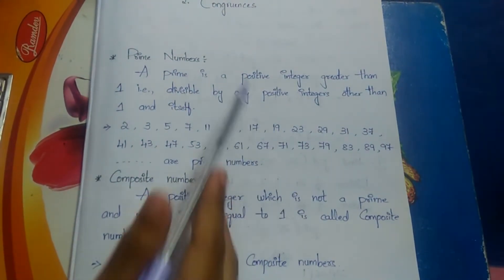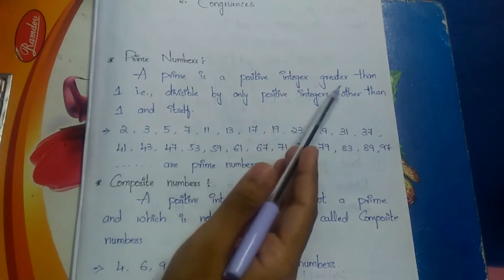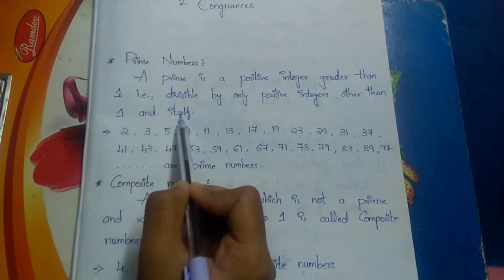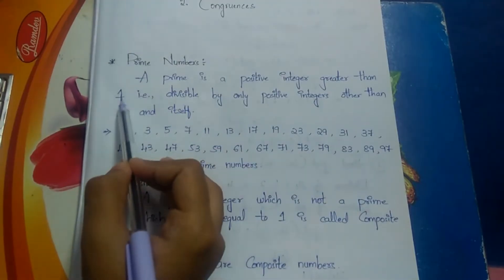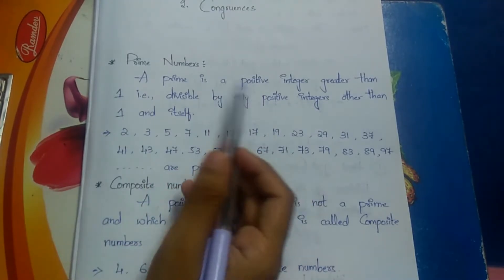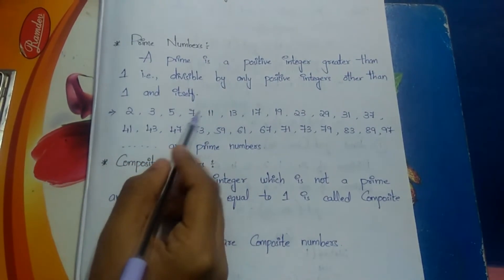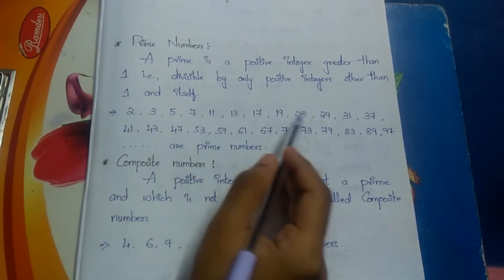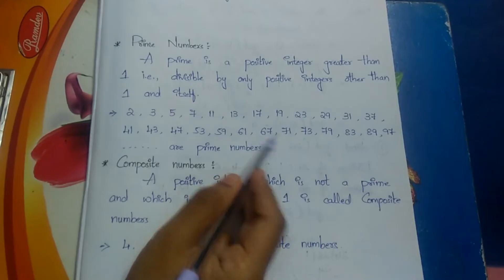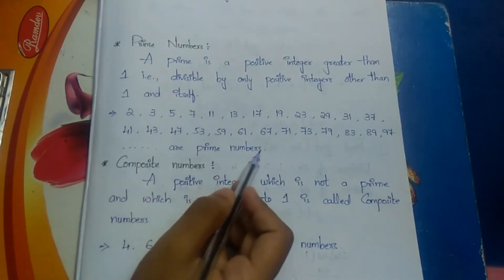For the introduction, we have two important definitions: prime numbers and composite numbers. A prime number is a positive integer greater than one that is divisible by only one and itself. Note that one does not come under prime numbers. Examples of prime numbers are: 2, 3, 5, 7, 11, 13, 17, 19, 23, 29, 31, 37, 41, 43, 47, 53, 59, 61, 67, 71, 73, 79, 83, 89, 97, and so on.